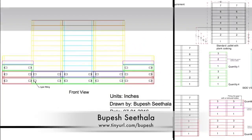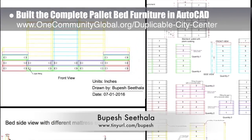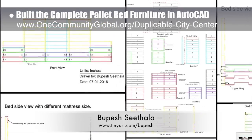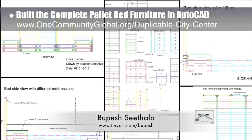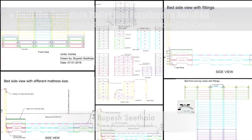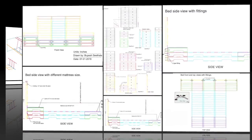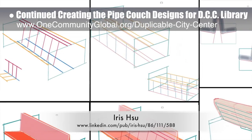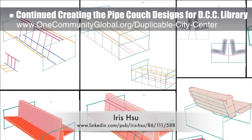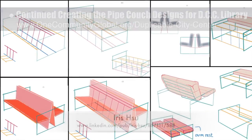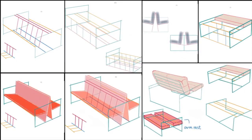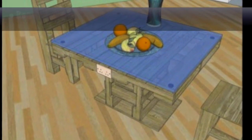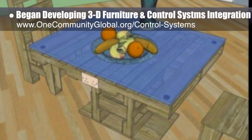Bupesh has built the complete furniture in AutoCAD, checking the details originally designed by the summer intern team against the recreation updates by our core team and adding in additional construction details as necessary. Ira Su, industrial designer, continued with additional pipe couch designs for the duplicable city center library. The drawings you see here are her fifth-generation drawings, continuing development of the couch idea with a stationary back. Behind the scenes, Mike Hogan, automation systems developer and business systems consultant, and myself began exploring how the control systems can be built into the furniture of the city center rooms.